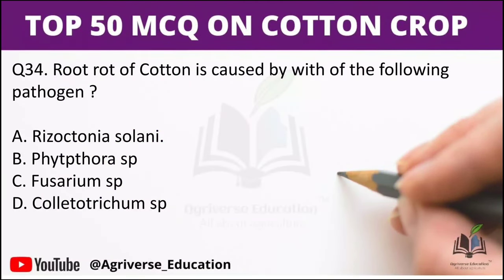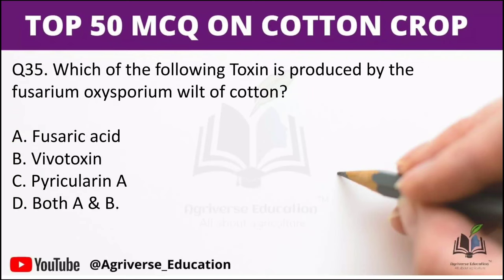Next question: Root rot of cotton is caused by which pathogen? Options are: Rhizoctonia, Phytophthora, Fusarium, or Colletotrichum. Option A is the right answer — root rot of cotton is caused by Rhizoctonia solani.